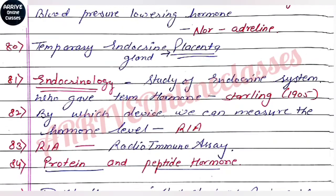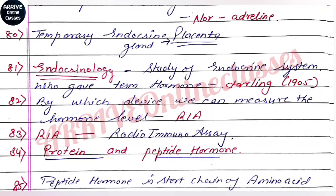The temporary endocrine gland is the placenta, which is present only in the mother's womb during gestation. It helps in embryo growth and acts as a temporary endocrine structure.